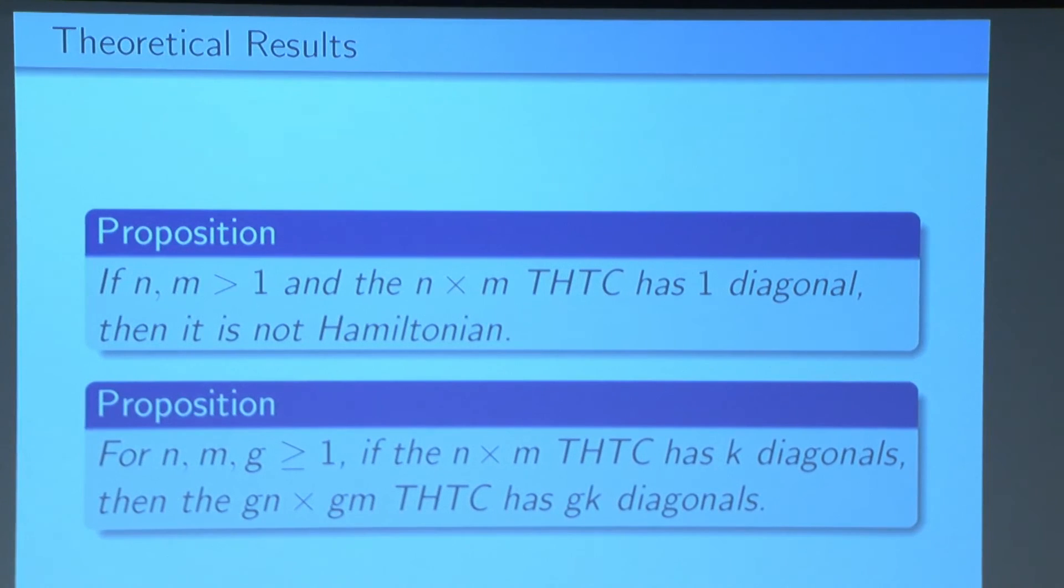Second proposition. If we scale a two-hole torus checkerboard by some factor G, then the number of diagonals also scales by that same factor G. And this is what we would intuitively expect, so it's nice to see that it's actually true.